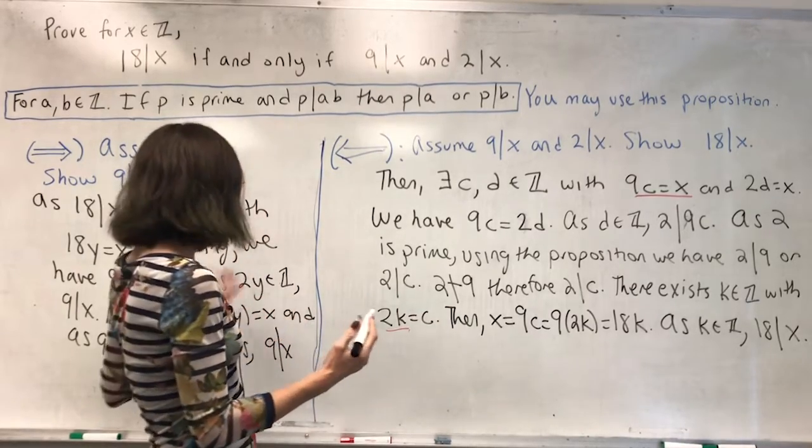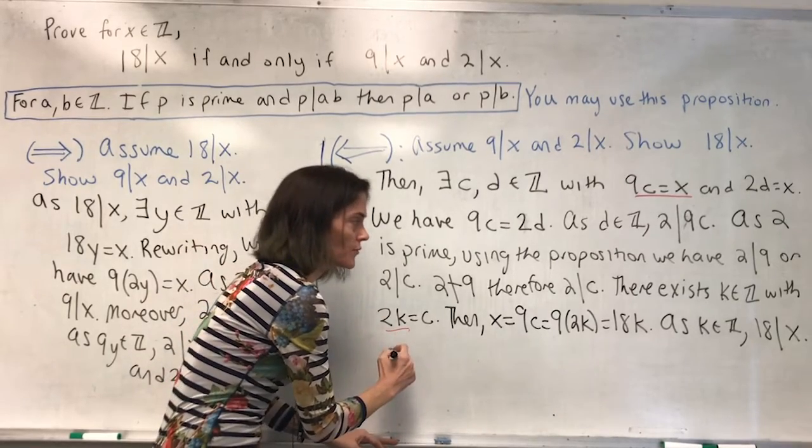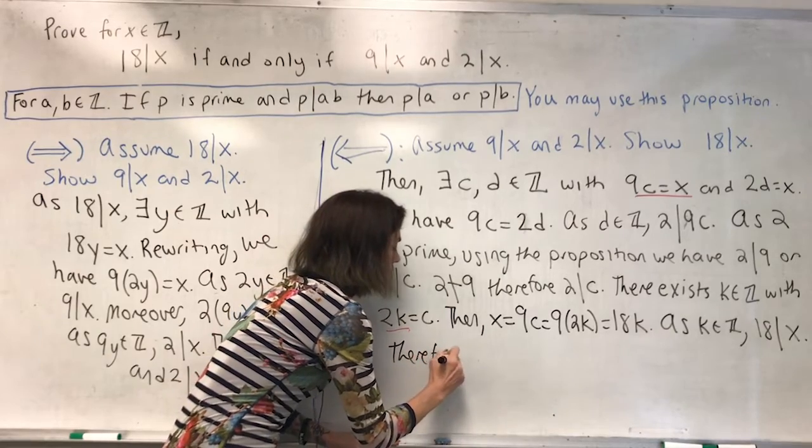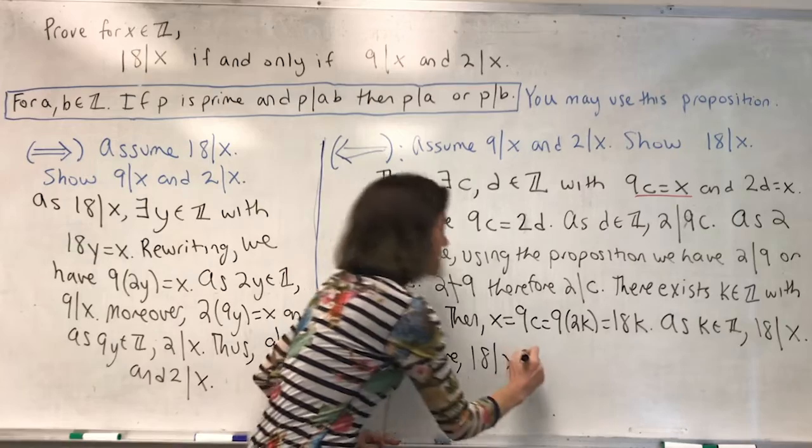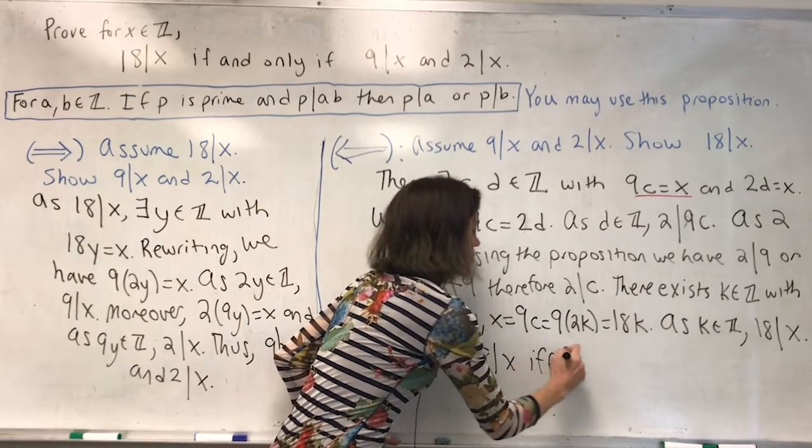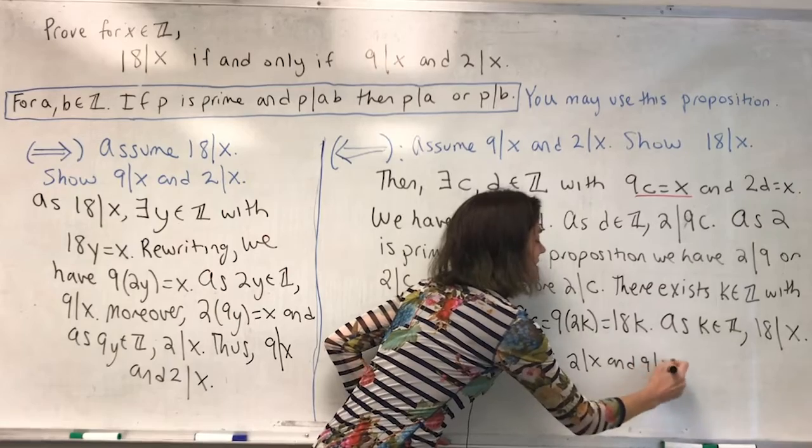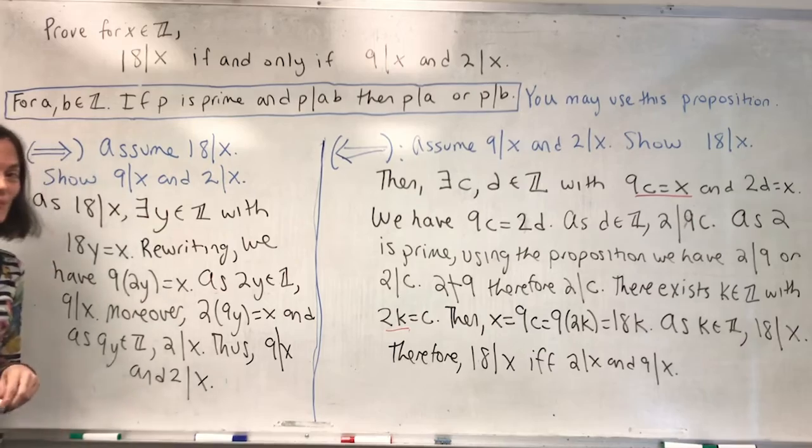We have shown both directions. Therefore, 18 divides x if and only if 2 divides x and 9 divides x. And we are finished with this if and only if proof.